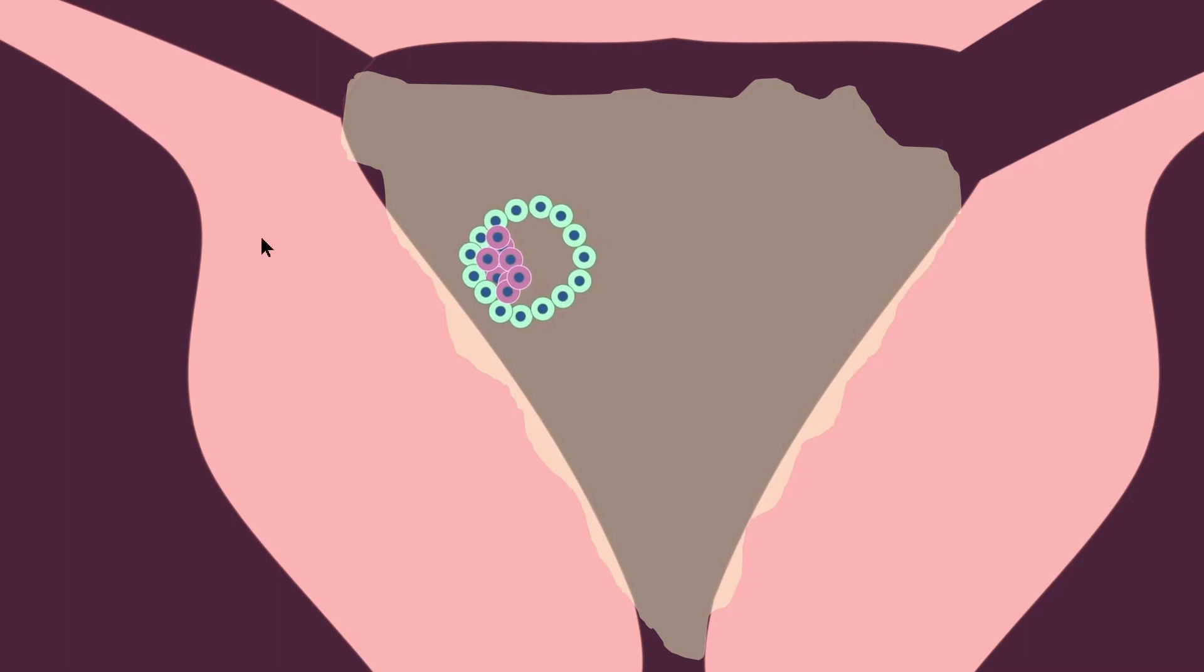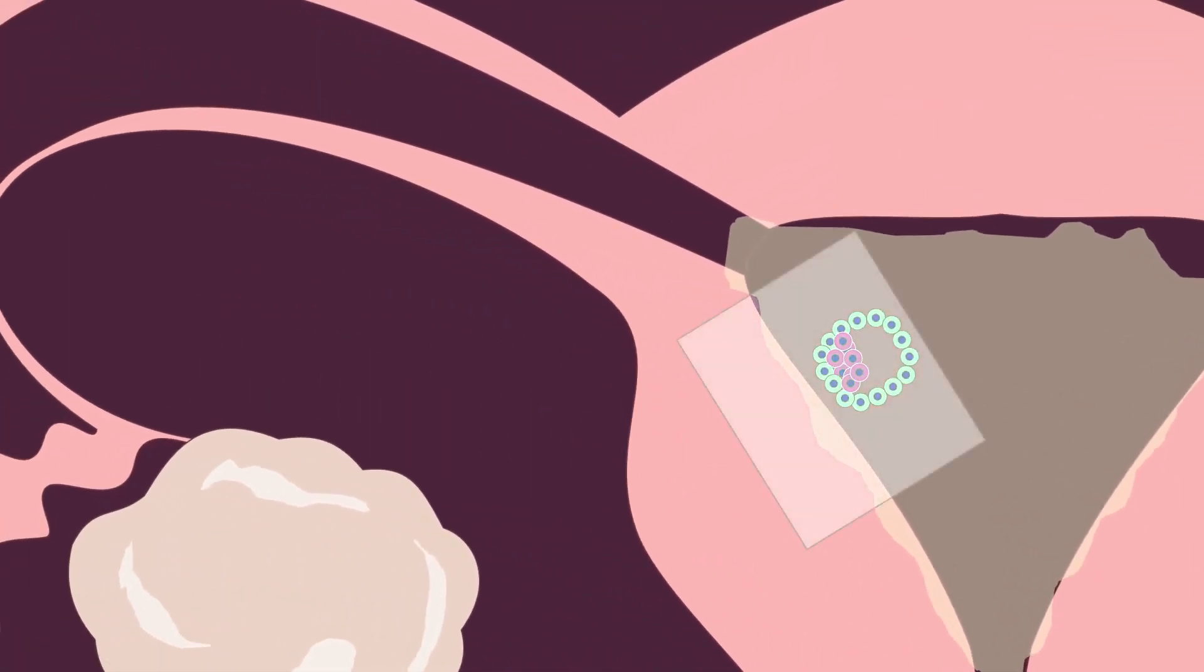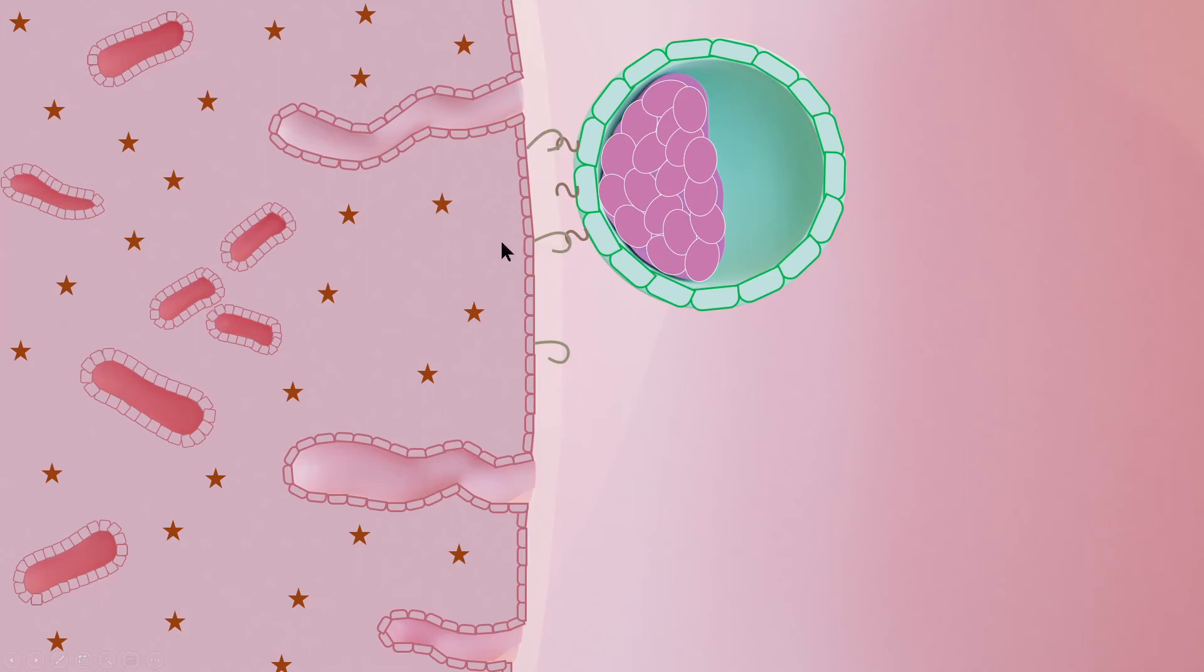Now it is ready for implantation. Let's have a closer view. Now this early embryo loosely attaches with the endometrium with the help of selectin molecules.